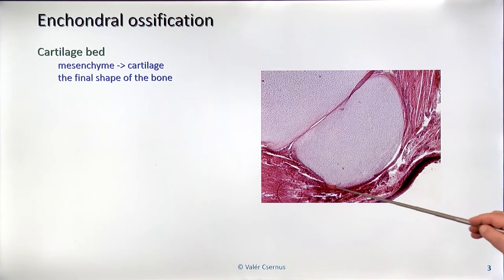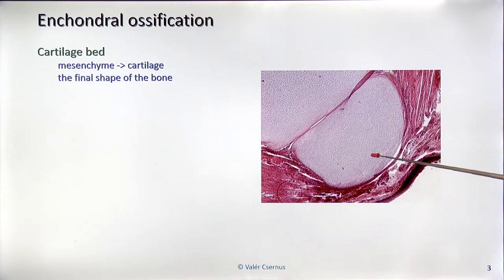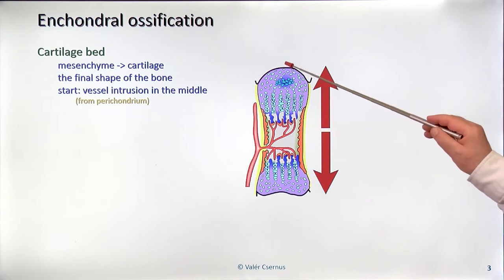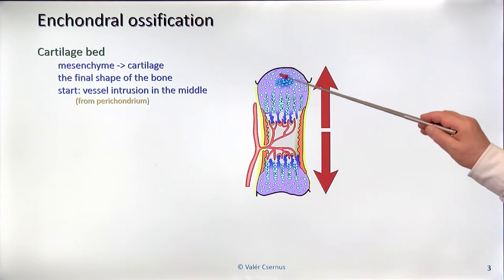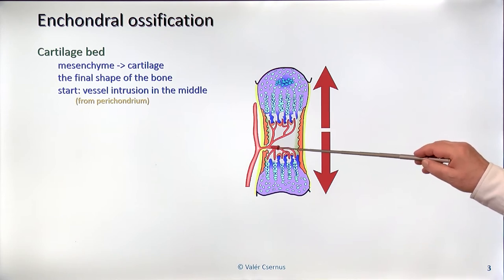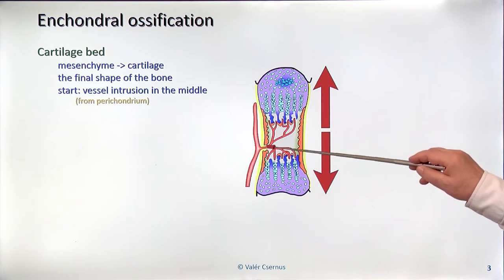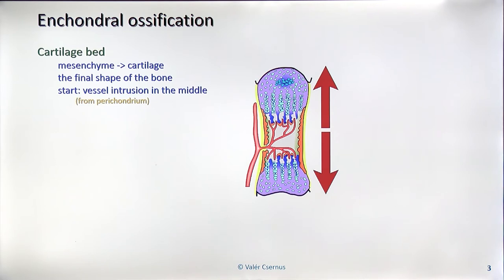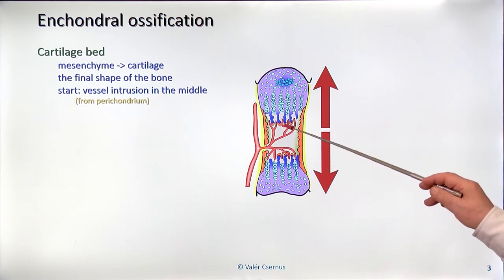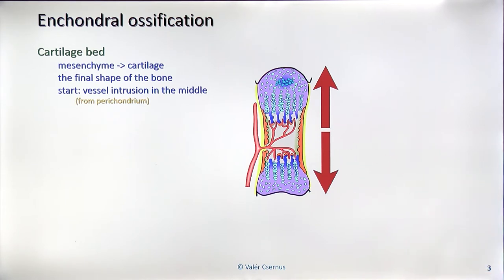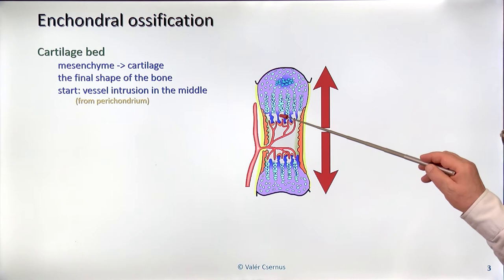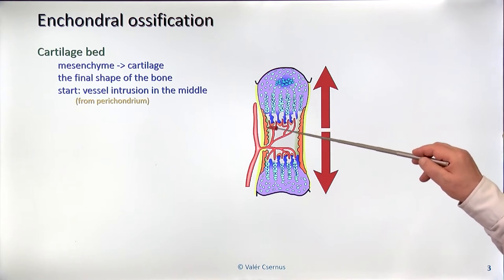The cartilage fits the final size and shape of the bone. This is a human embryo — this is the first and second phalanx, and you can see it's fully cartilaginous and the shape more or less fits the final. The long bones develop from all of cartilage, and from the middle of the structure, through the perichondrium, vessels break in. As you know, cartilage has no vessels inside, so this is something new, and the whole transformation process will go in the direction of the two ends. This process takes time — practically years.